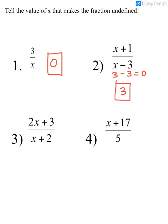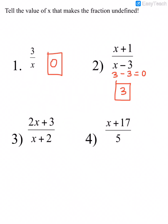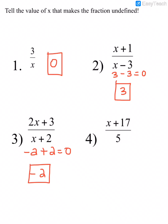All right, for number 3, what could I plug in for x that would cause my denominator to be 0? Now in numbers 2, 3, and 4, we have x's in the numerator, but we don't care about the numerator. It's okay if we have a 0 in the numerator. When we're trying to determine what values of x would cause the fraction to be undefined, we only look at the denominator. If I plugged negative 2 in where the x is, negative 2 plus 2 would be 0. So the value of x that would cause my denominator to be 0 is negative 2.